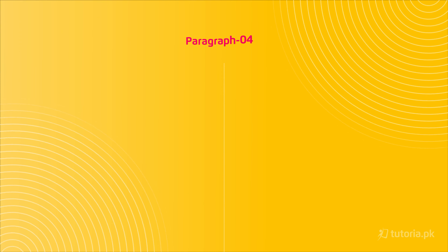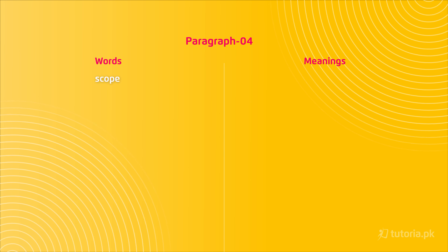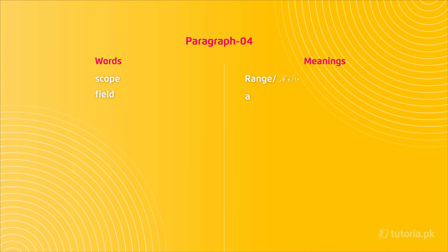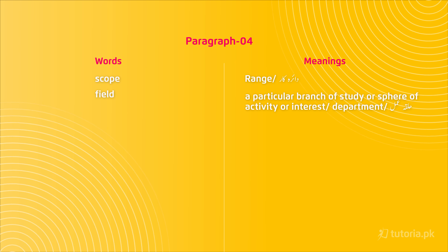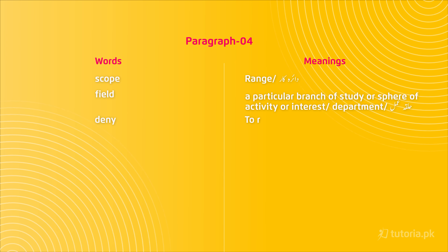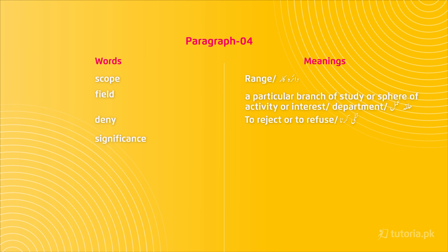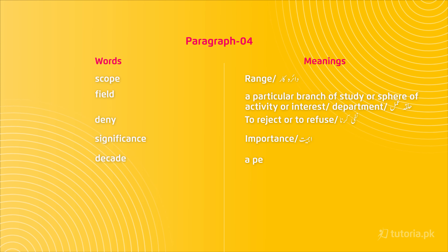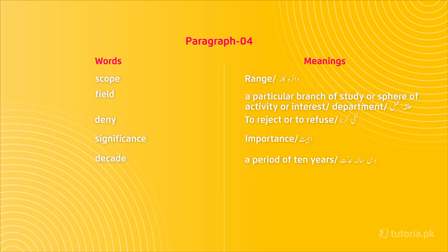We have come to the fourth paragraph. Let's discuss difficult words and their meanings. First word is 'scope,' which means range (daira). Second word is 'field,' which means a particular branch of study or sphere of activity or interest. Third word is 'deny,' which means to reject or to refuse (nafi karna). Fourth word is 'significance,' which means importance (ehmiyat). Fifth word is 'decade,' which means a period of 10 years — in Urdu, des sala muddat.